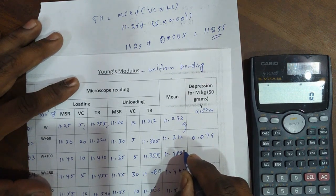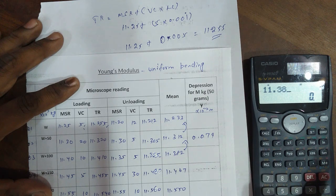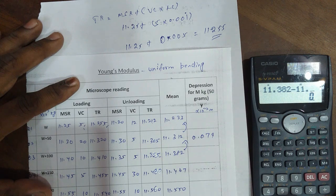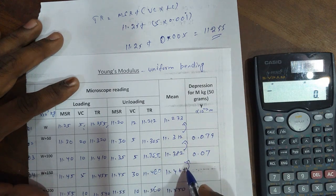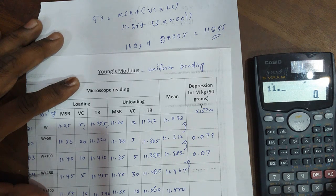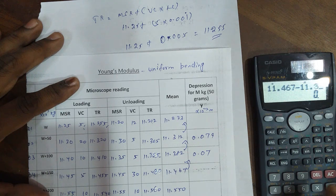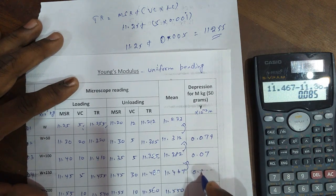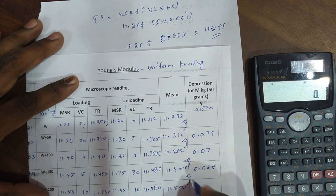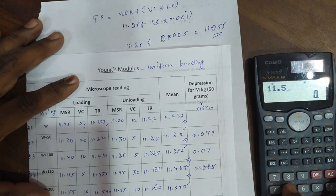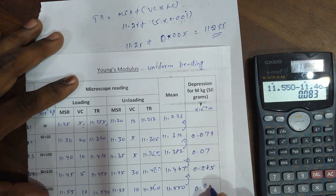Next, we find W plus 150 minus W plus 100. So 11.467 minus 11.382. Continuing the calculations for the other values, the answer is 0.083 centimeters.